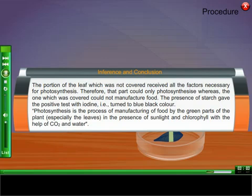Photosynthesis is the process of manufacturing of food by the green parts of the plant, especially the leaves, in the presence of sunlight and chlorophyll with the help of carbon dioxide and water.